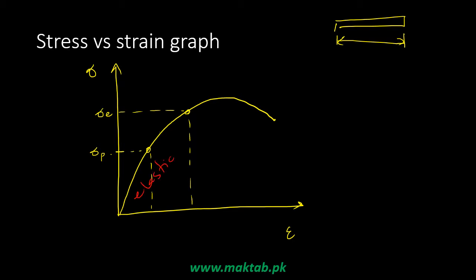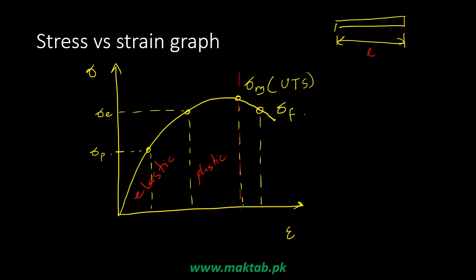Beyond the elastic limit, we enter a region where removing stress does not return the solid to its original shape. The point representing the maximum stress the material can withstand is the ultimate tensile strength. After this, the material slowly deforms further, and eventually we reach the breaking point, which we represent as the fracture stress.